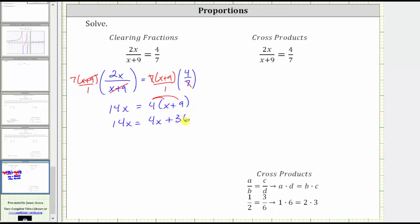We now isolate the variable term on one side. Let's subtract 4x on both sides. Simplifying, 14x minus 4x is 10x. We have 10x equals 4x minus 4x is zero, and therefore we have 10x equals 36.